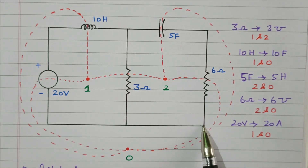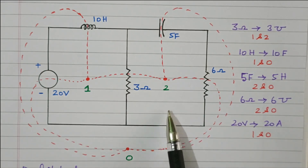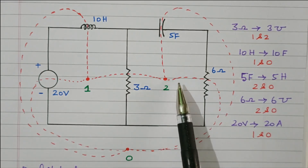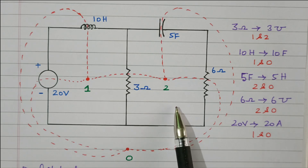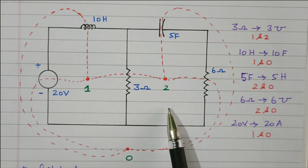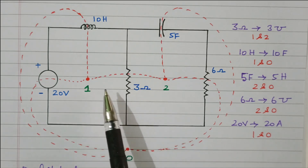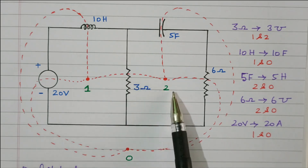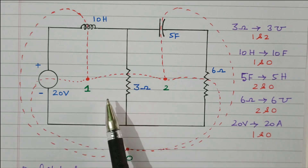The black color line is the original network. The red color lines are known as the dual network. Now we need to draw the dual network based on the analysis we did.